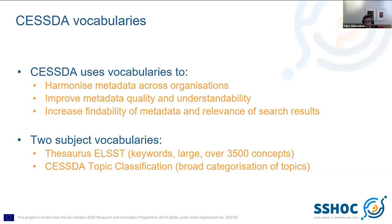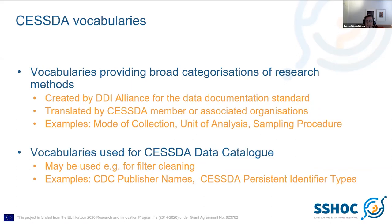When search interfaces use controlled vocabularies in filters to allow users to restrict their searches according to certain parameters, the relevance of search results increases. In general, SESTA uses two subject vocabularies: a thesaurus which is larger with about 3500 concepts, and the SESTA topic classification, which is a much broader categorization of topics with about 100 terms.